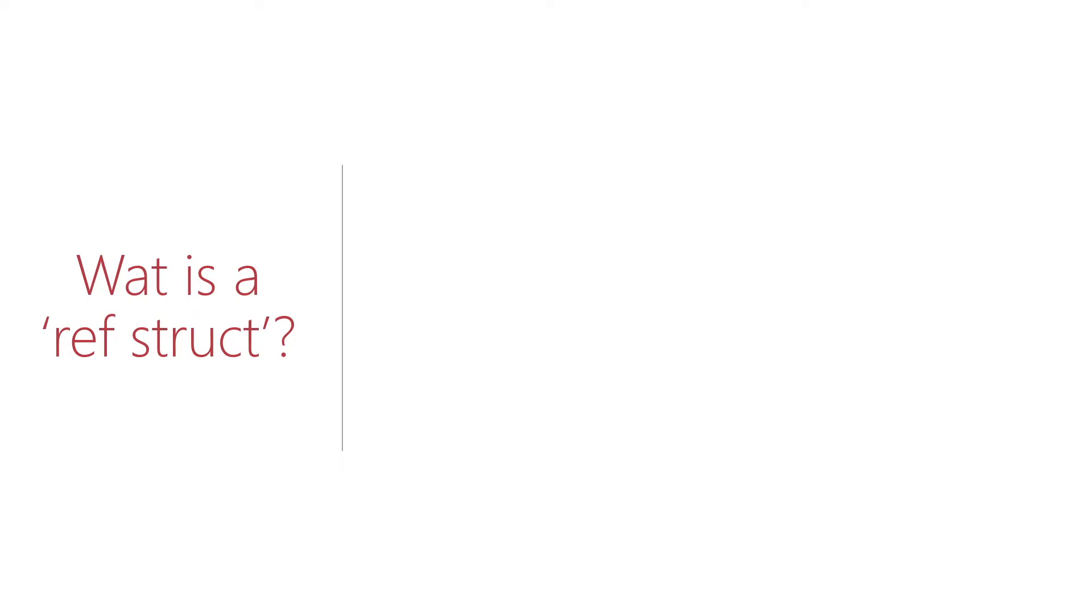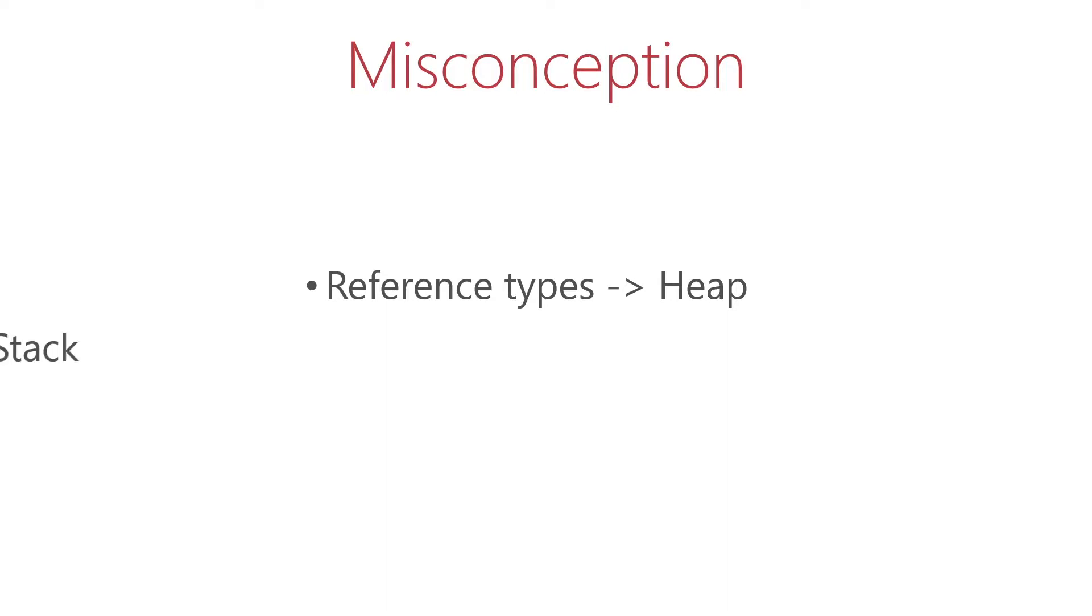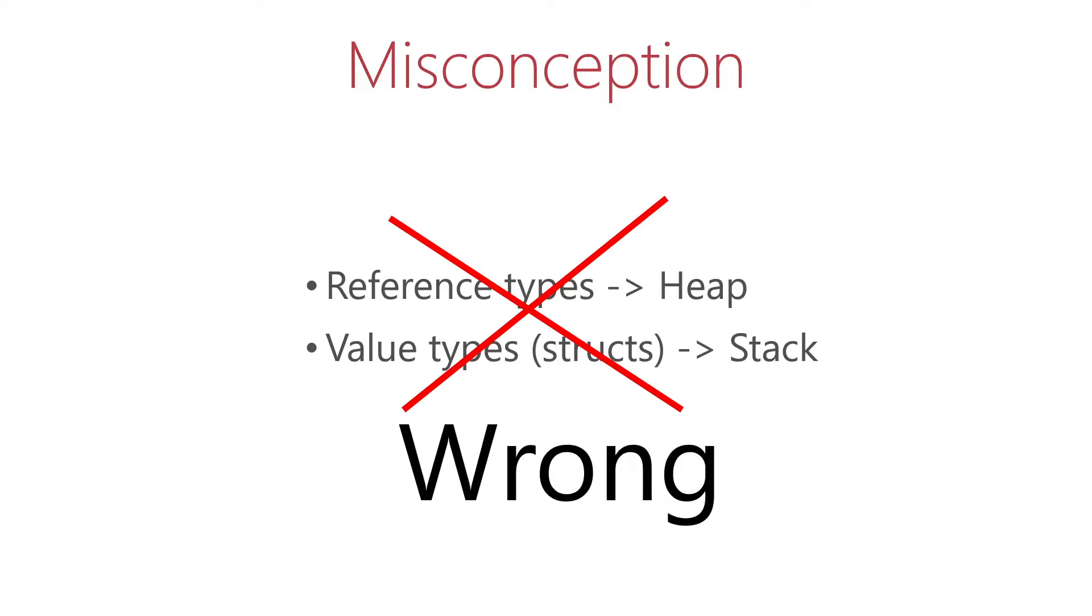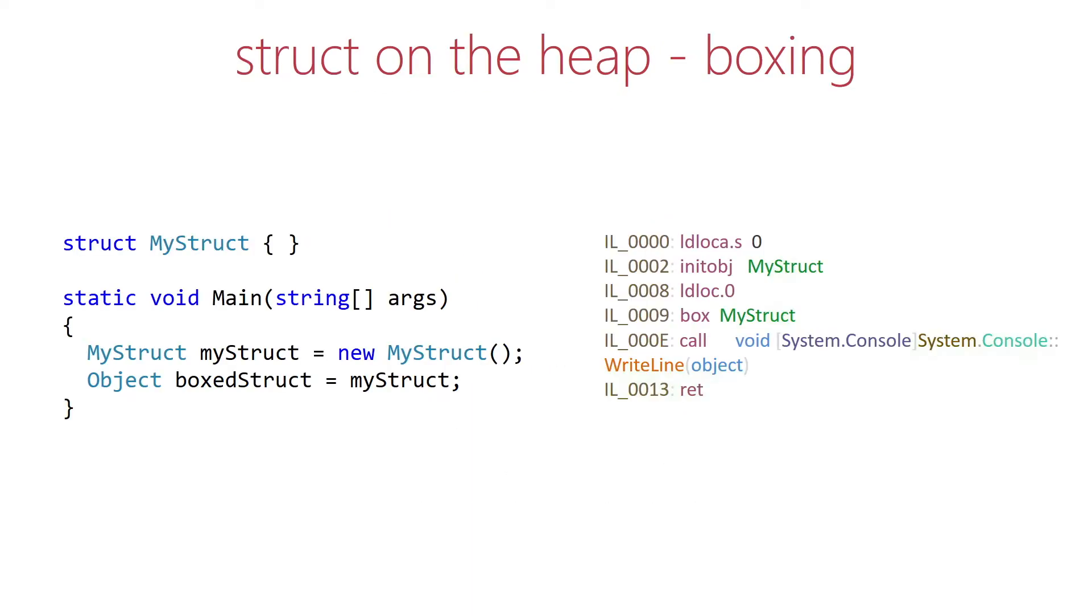So what is a ref struct? Well, a ref struct is basically a struct that can only live on the stack. Now a common misconception is that since classes are reference types those live on the heap and structs are value types and those live on the stack. This is wrong. A normal struct can also be allocated on the heap.